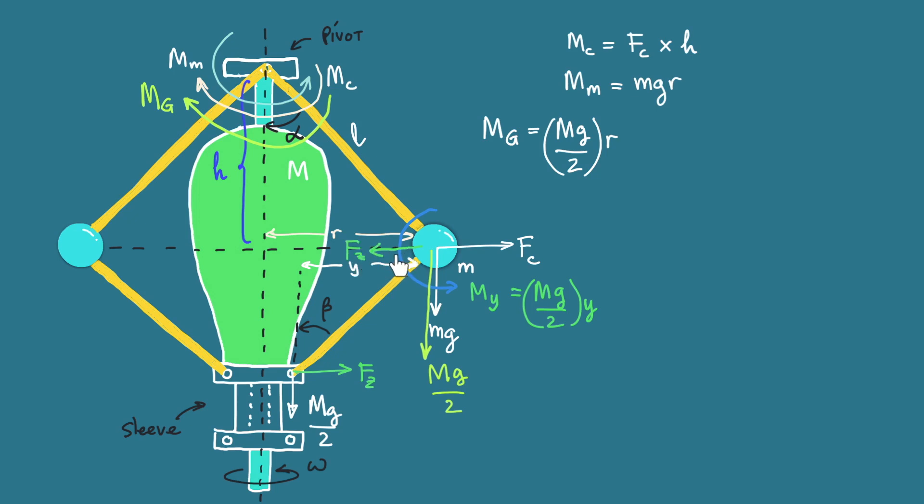This FZ should be multiplied by that length to produce MY. So FZ multiplied by Z equals moment MY, and thus FZ is MY over Z. Now this FZ contributes to the moment at the pivot which is FZ multiplied by H and the moment has clockwise direction. So we have another component for MG which is FZ multiplied by H.